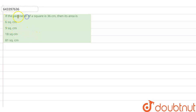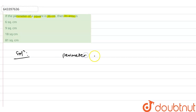Hi guys, we have a question right now. If the perimeter of a square is 36 centimeters — perimeter is given — then its area is. So let us come to solve this. What is given? Perimeter of square is 36 centimeters.